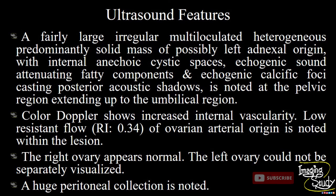In summary: a fairly large, irregular, multi-loculated, heterogeneous, predominantly solid mass of possibly left adnexal origin, with internal anechoic cystic spaces, echogenic sound-attenuating fatty components, and echogenic calcific foci casting posterior acoustic shadows, noted at the pelvic region extending up to the umbilical region. Color Doppler shows increased internal vascularity. Low-resistance flow of ovarian arterial origin is noted within the lesion. The right ovary appears normal but the left could not be separately visualized. A huge peritoneal collection is noted. Our diagnosis was teratoma with malignant transformation.